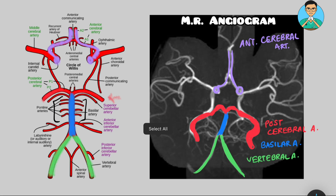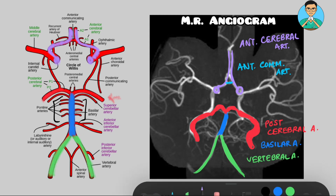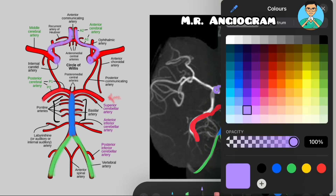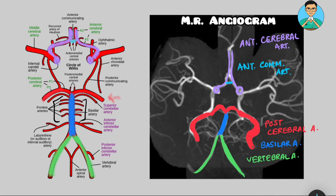Connecting these two anterior cerebral arteries is a very small artery over here, which is known as the anterior communicating artery. In the schematic diagram, you can see it over here, where I have marked it with sky blue.